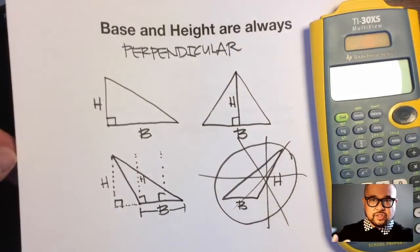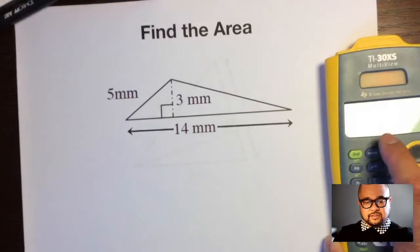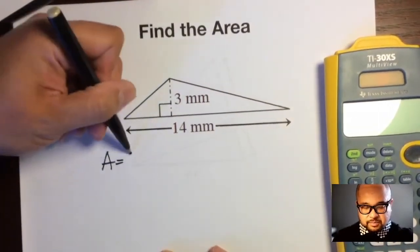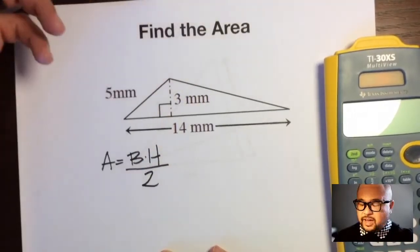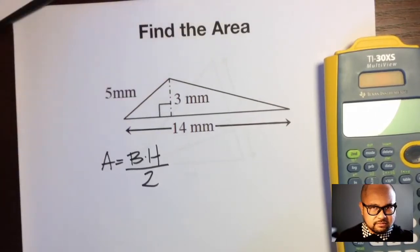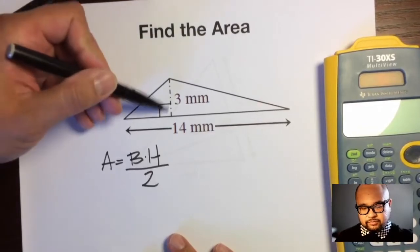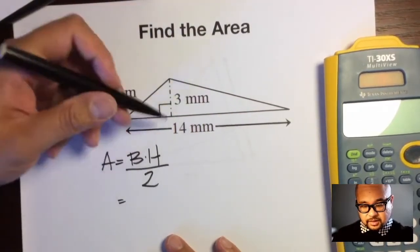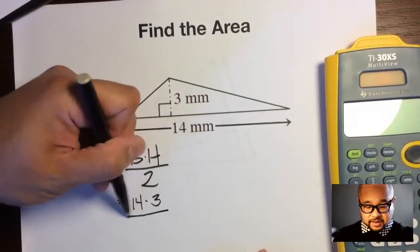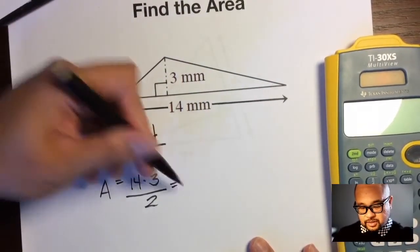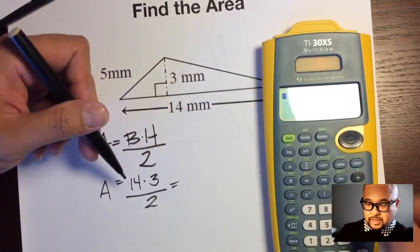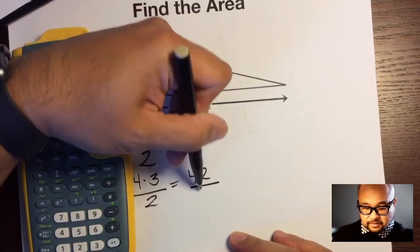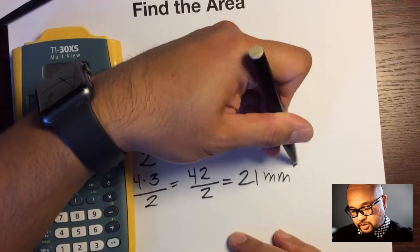Let's use our formula: area equals base times height divided by two, because a triangle is half of a rectangle. For example one, there are three numbers but we identify the base and height using the little square — that marks which sides are perpendicular. So we write 14 times 3, divided by 2. Multiply 14 times 3 which is 42, then divide by 2, which gives us 21 millimeters squared.